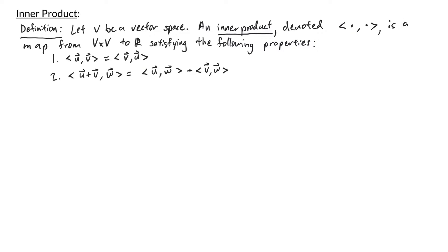Next we have a distributive property. If I have the inner product of u plus v with w, then w distributes to give us the inner product of u and w plus the inner product of v and w. The third property says that if I have a scalar c times the vector u and I take the inner product of that with v, then the scalar c can be pulled out of the inner product, giving c times the inner product of u and v.